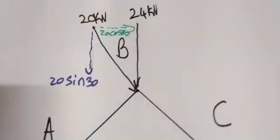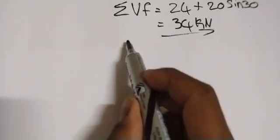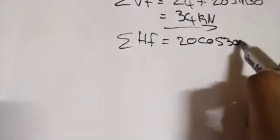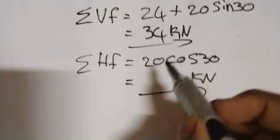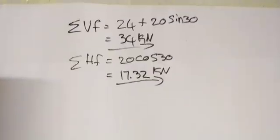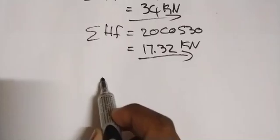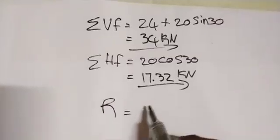We then take our horizontal forces, which will be 20 cosine of 30. Taking the summation of the horizontal forces — 20 cos of 30 — that leaves us with a value of 17.32 kilonewtons.